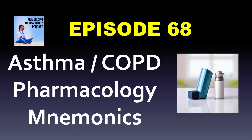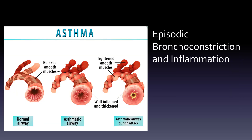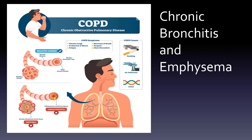Here I want to go over asthma and COPD and get the big picture. Asthma is that episodic bronchoconstriction and inflammation where sometimes the smooth muscle tightens up, causing a narrowed airway — and during an asthma attack, that narrowing increases. COPD involves two terms: chronic bronchitis, which is inflammation and excess mucus, and emphysema, where the alveolar membranes are breaking down.